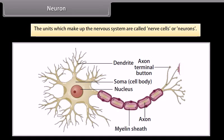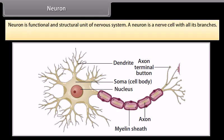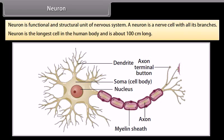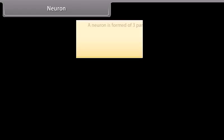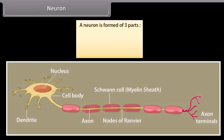The units which make up the nervous system are called nerve cells or neurons. A neuron is the functional and structural unit of the nervous system — a nerve cell with all its branches. It is the longest cell in the human body, about 100 cm long. A neuron is formed of three parts: the cytone, dendrites, and axon.